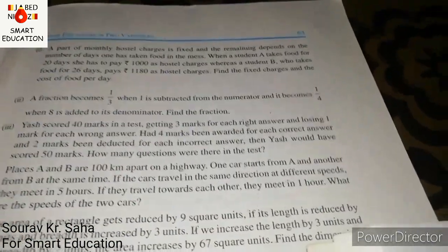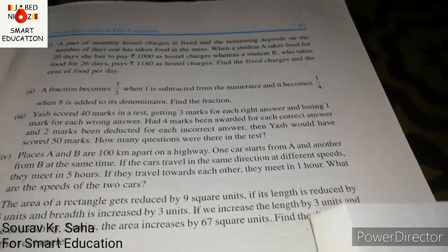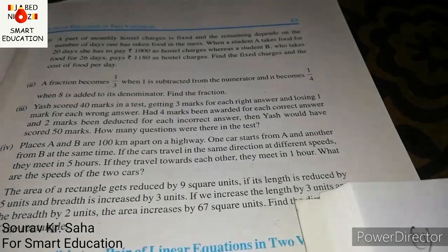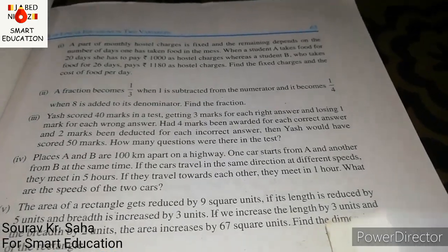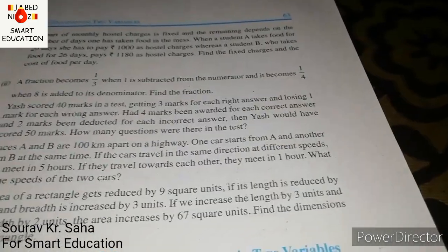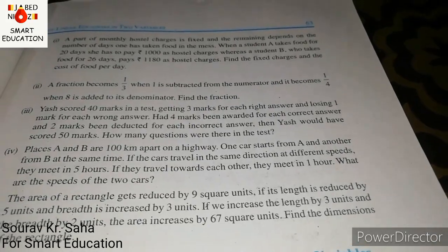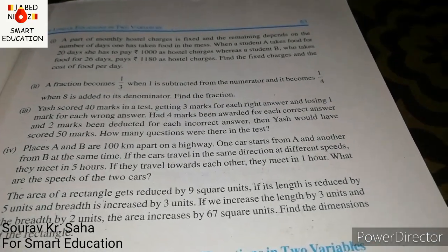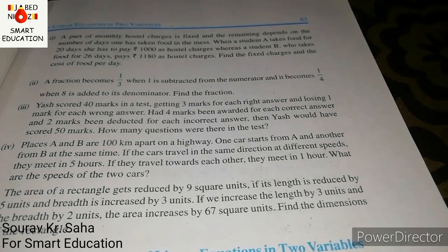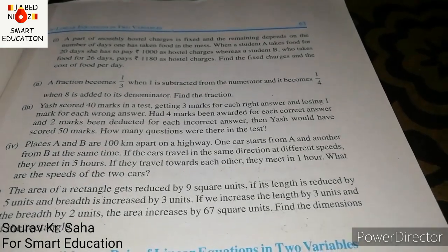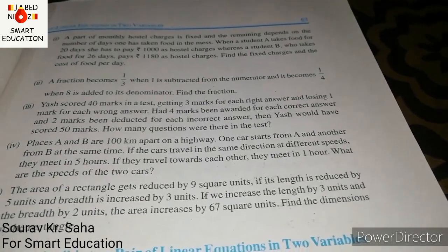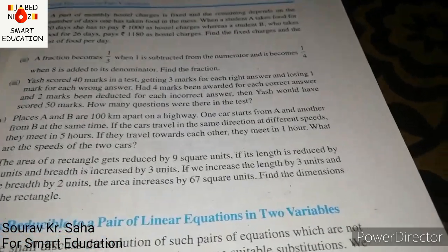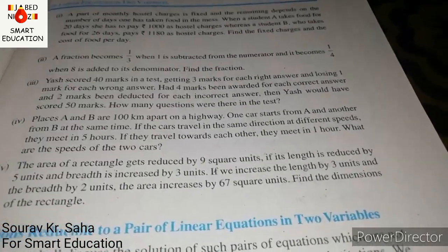Moving to question number 3: Yash scored 40 marks in a test, getting 3 marks for each right answer and losing 1 mark for each wrong answer. Had 4 marks been awarded for each correct answer and 2 marks been deducted for each incorrect answer, then Yash would have scored 50 marks. How many questions were there in the test?